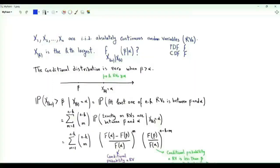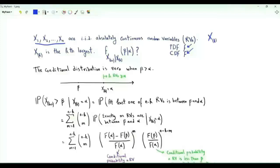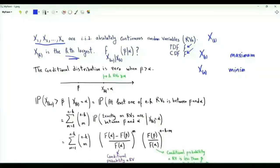Bismillah ar-Rahman ar-Rahim. We have independent and identically distributed random variables X1 to Xn, jointly absolutely continuous, with PDF denoted by small f and CDF denoted by capital F. X with subscript k in brackets is the k-th largest random variable. So X bracket 1 is the maximum and X sub n is the minimum. The goal is the joint distribution between Xk and Xk+1.